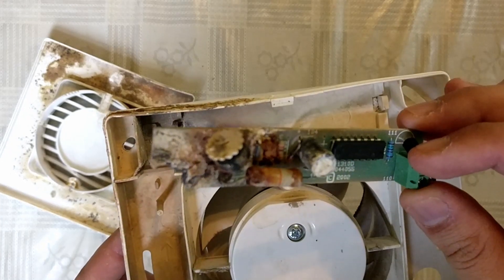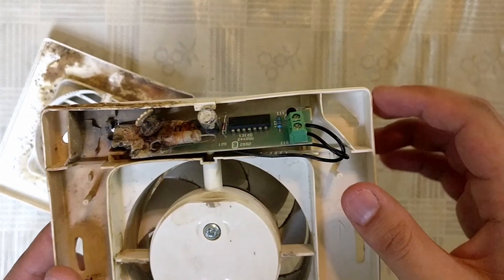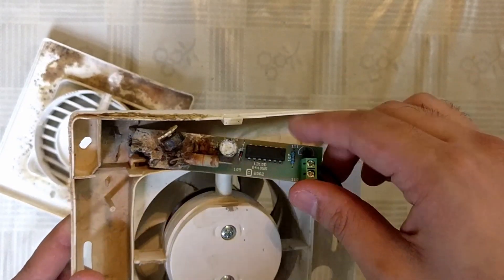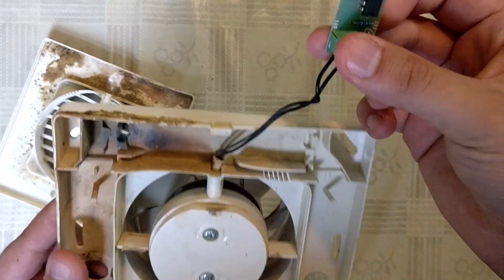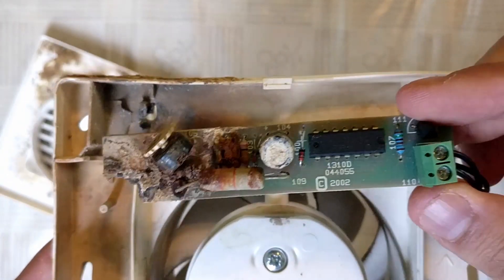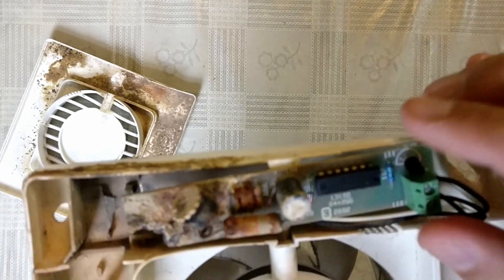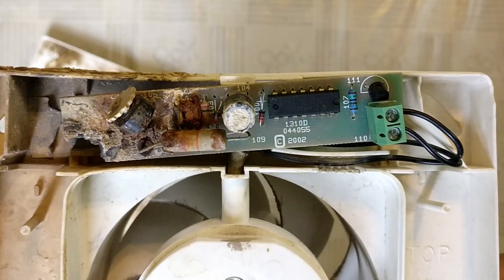Looking at the connectors it's clear the mains input side is the side that failed and quite catastrophically. It's hard to make out the exact components in this state. Luckily I managed to get my hands on the replacement unit before it was installed. I don't have that unit with me anymore but I did have it long enough to take some pictures of a fresh new circuit.